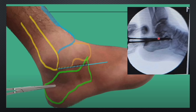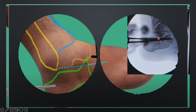A sinus tarsi approach is a good one. If you are planning for a large profile plate placement, definitely go for the extensile lateral approach, but I don't prefer that approach because of its own complications. So the sinus tarsi approach is given directly centered over the subtalar joint. There is a separate video about the sinus tarsi approach which is given in the description — you can check that if you want.